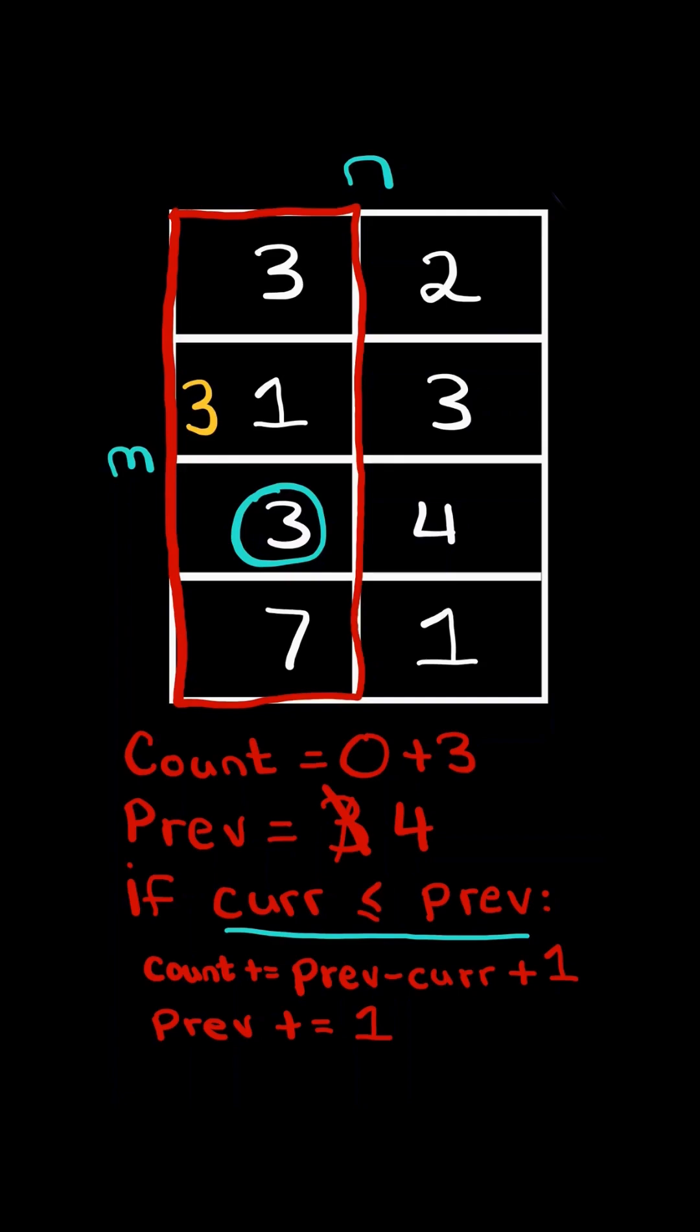Current is less than previous, so we calculate the number of operations and increment previous by 1.